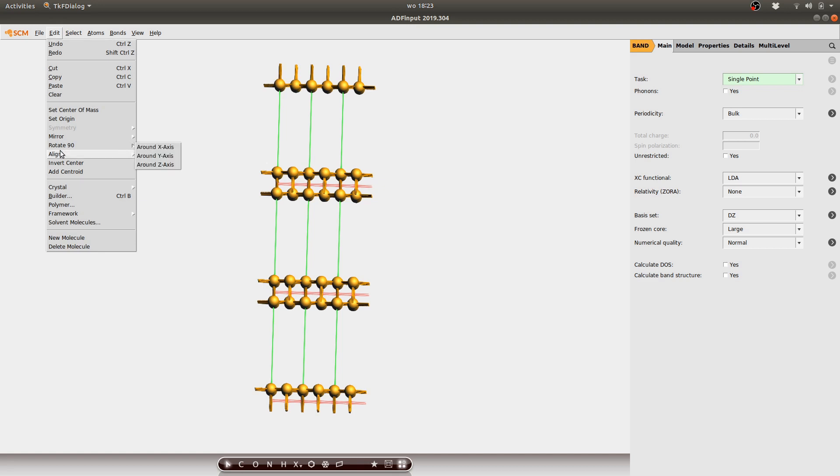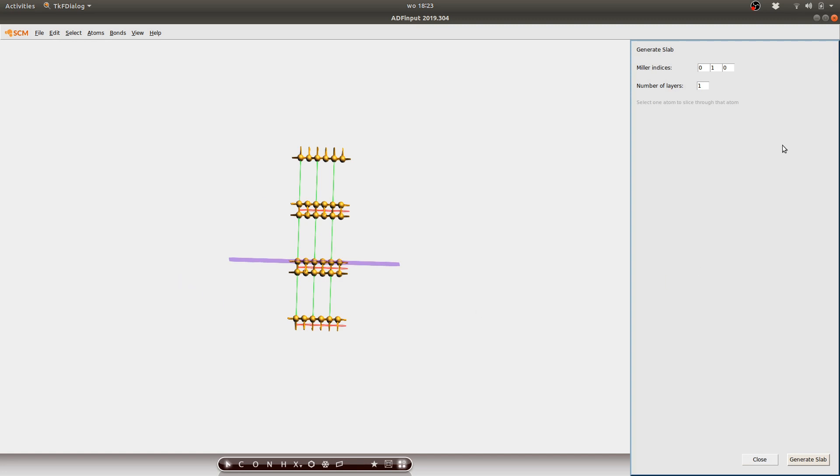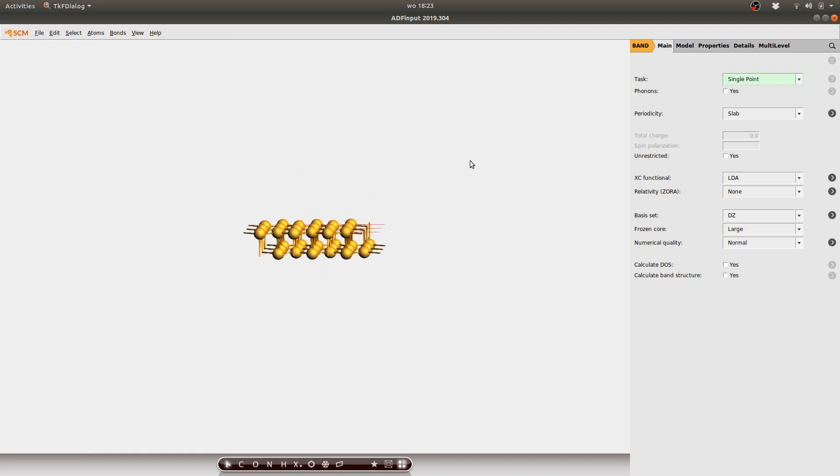Next we pick edit crystal and generate slab which opens another options panel. I then pick the correct miller indices of the cutting plane. I briefly verify that this is what we want. I pick a single number of layers and then click on generate crystal in order to obtain this monolayer model.